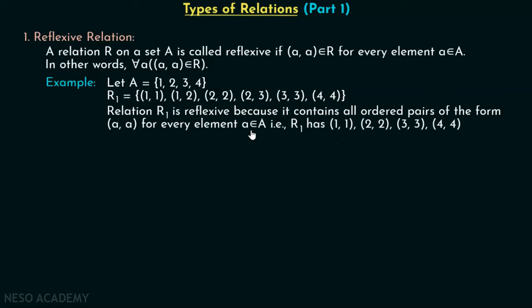Relation R1 is reflexive because it contains all ordered pairs of the form (A, A) for every element A belonging to A. That means for every element inside set A — 1, 2, 3, 4 — we have an ordered pair of the form (A, A). That is, we have all the ordered pairs (1,1), (2,2), (3,3), (4,4) inside relation R1. You can see that (1,1) is there, (2,2) is there, (3,3) is there, (4,4) is also there. Therefore, it is clear that R1 is reflexive.